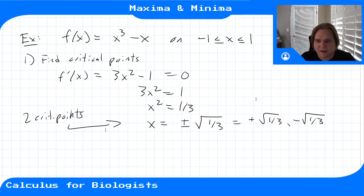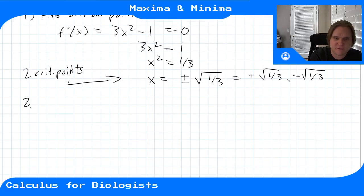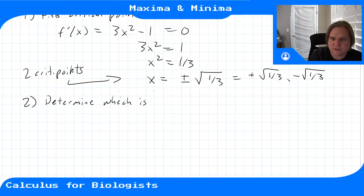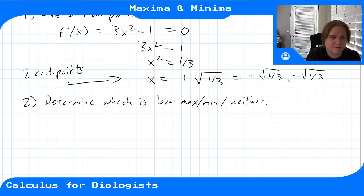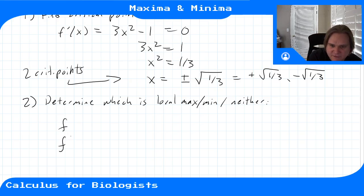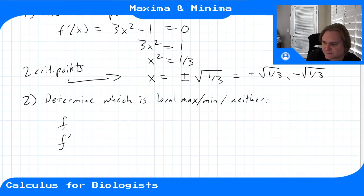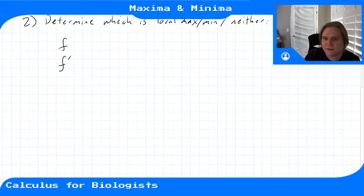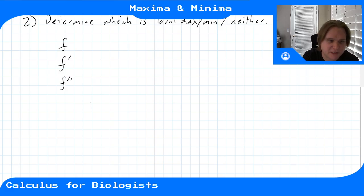For these critical points, we need to determine which is a local max, which is a local min, or maybe neither. Let's check the sign of the derivative by making a sign table with f, f', and also f'', since the second derivative will give useful information too.